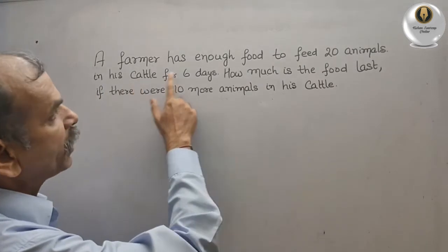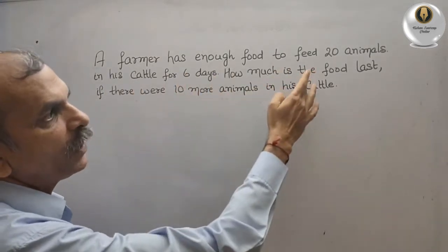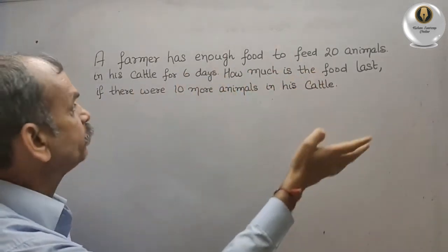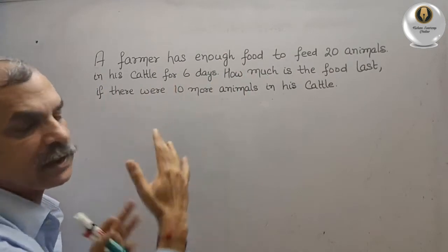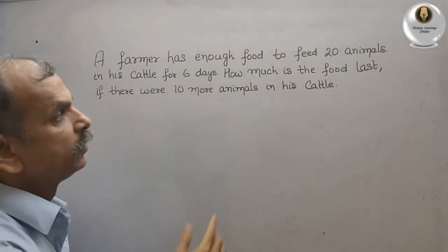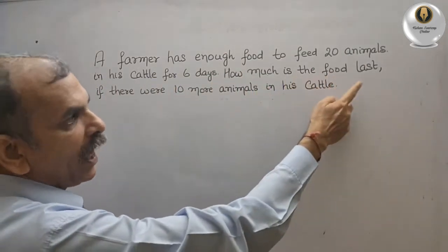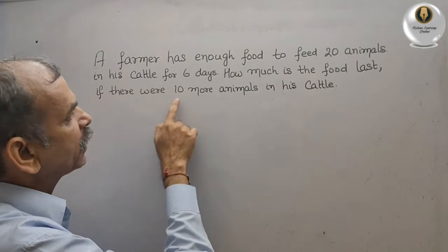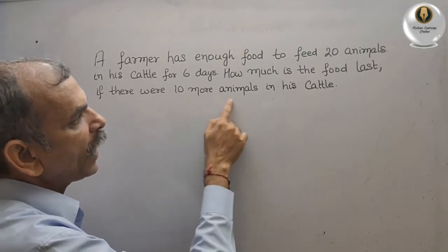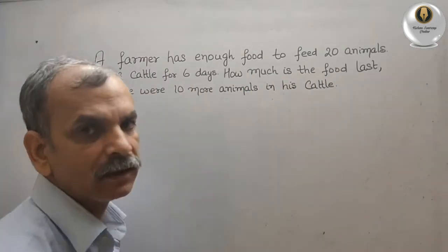A farmer has enough food to feed 20 animals in his cattle for 6 days. How long will the food last if there were 10 more animals in his cattle?